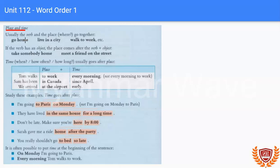If the verb has an object, the place comes after the object. Here we go. Verb is an object, then the place. Go home. Live in a city. Walk to work.